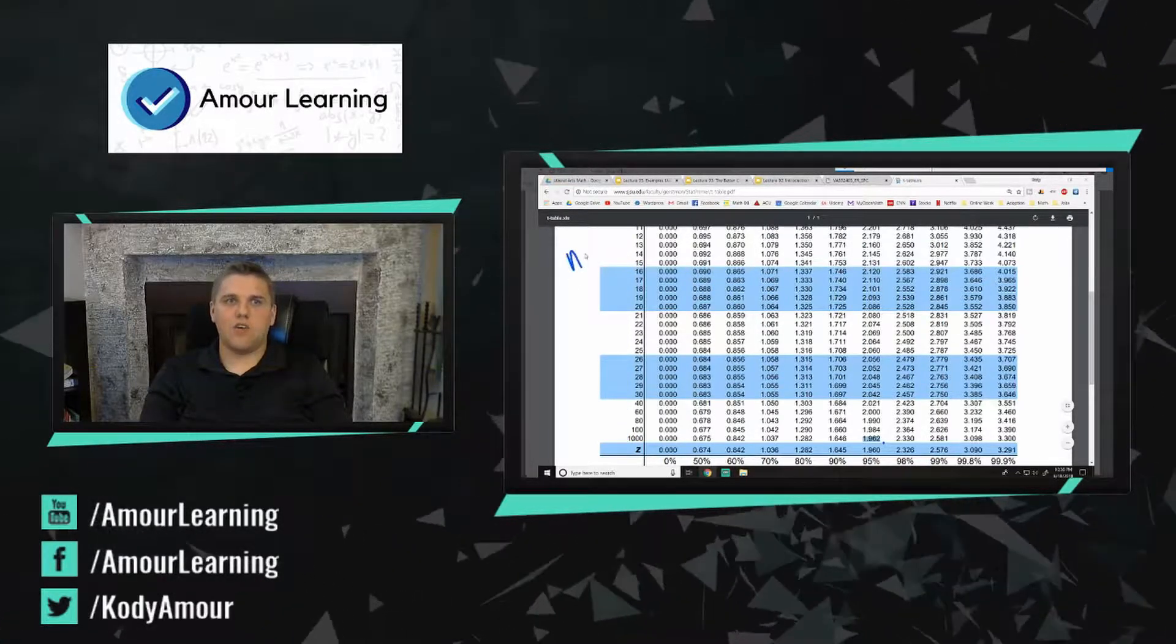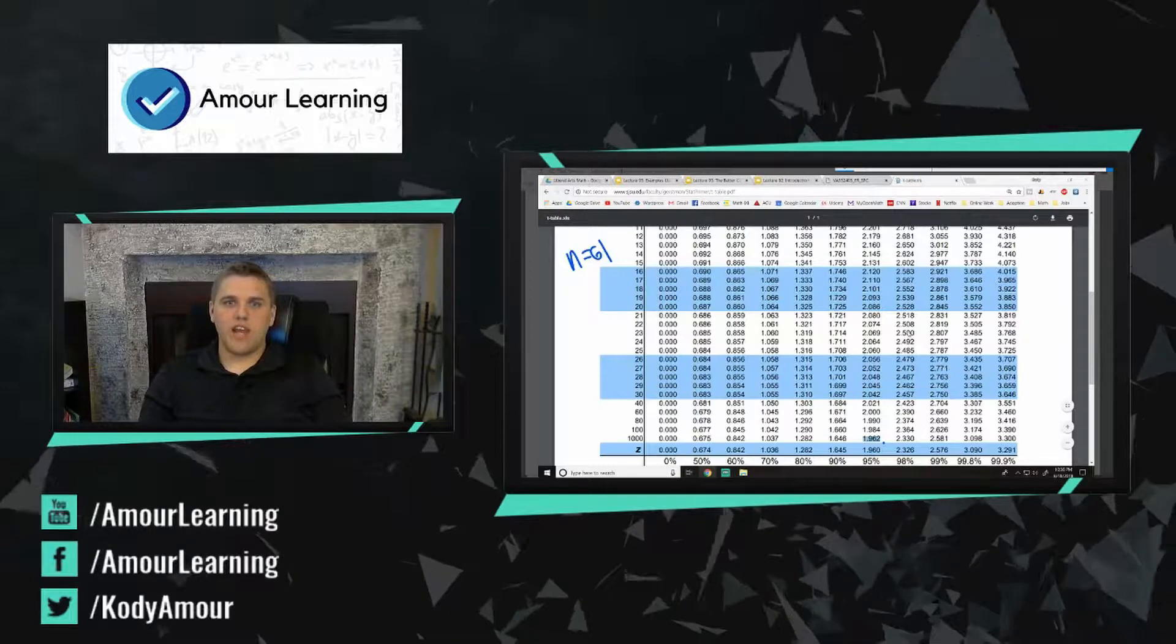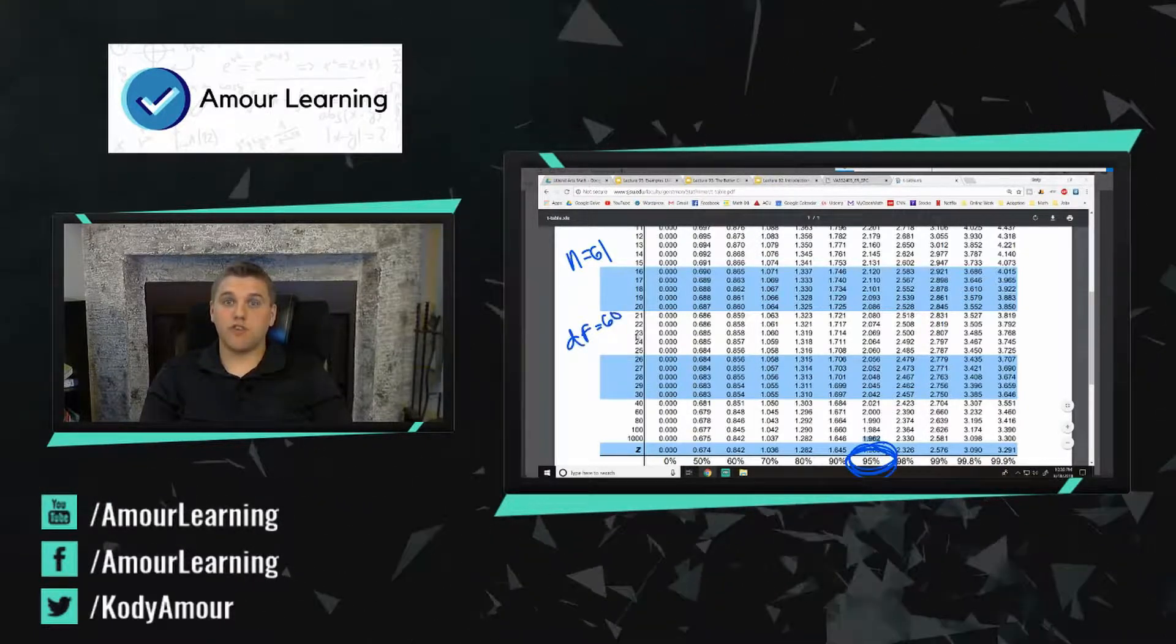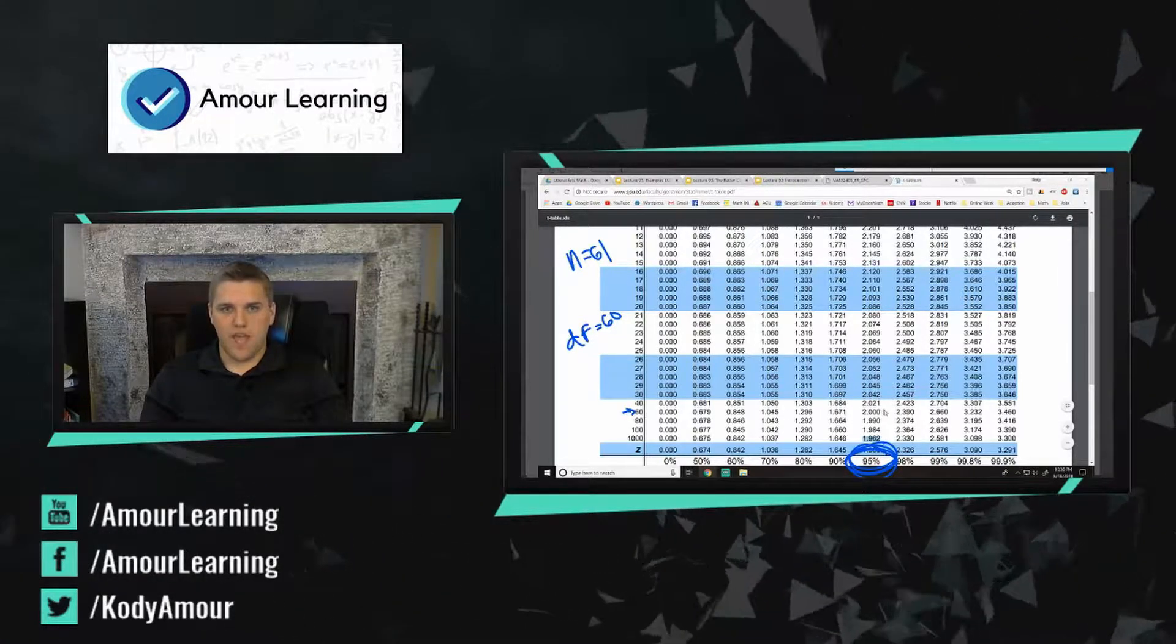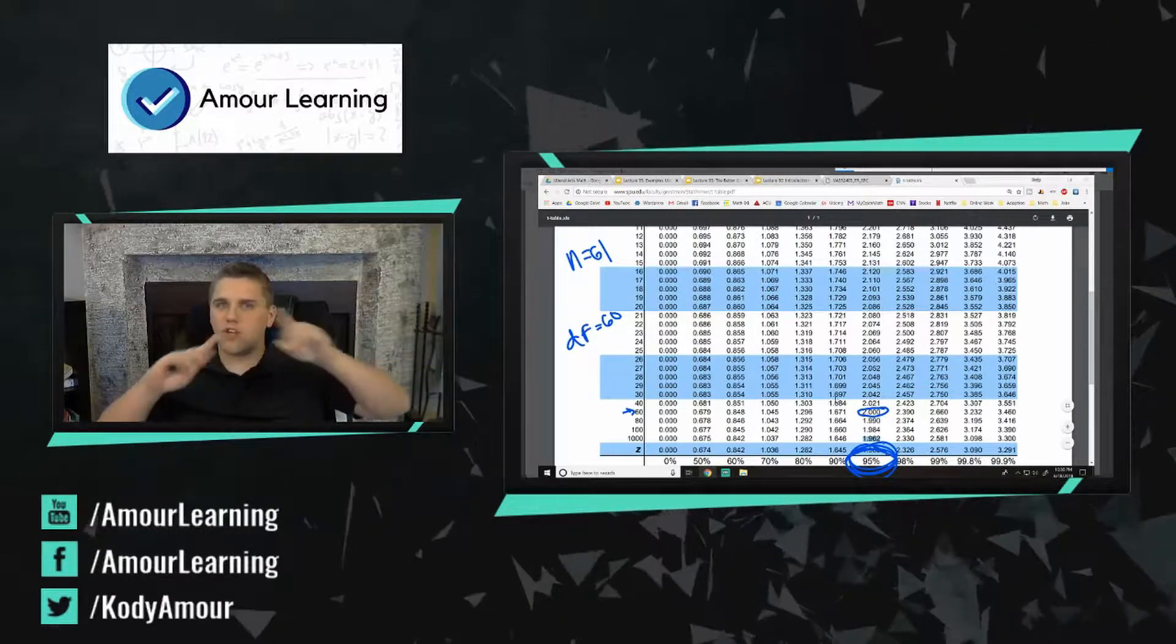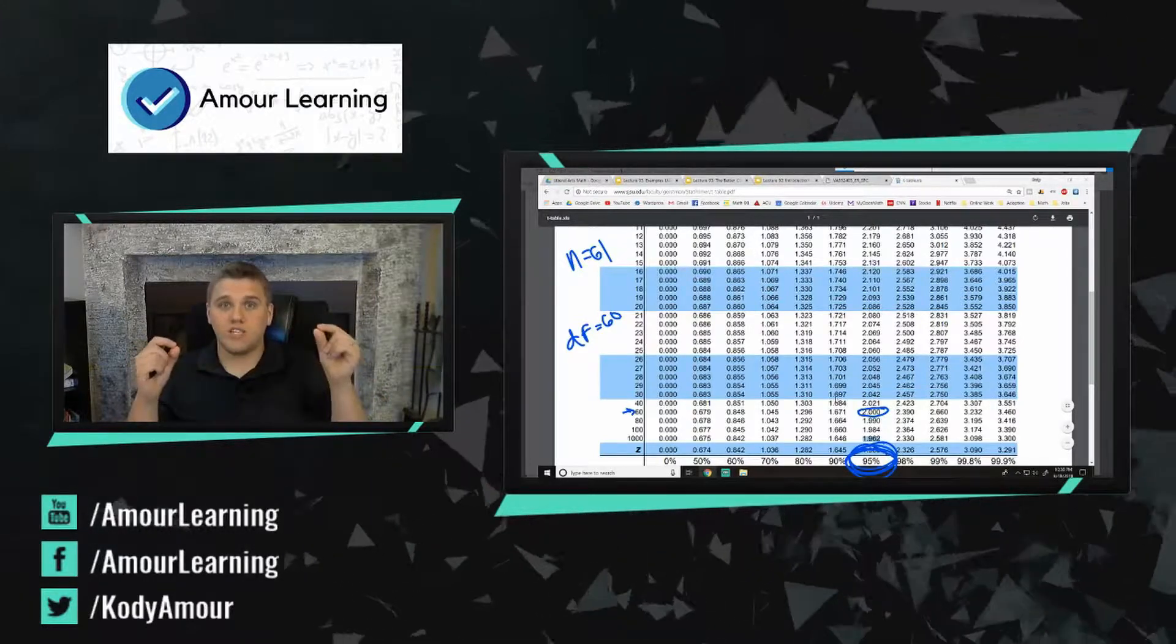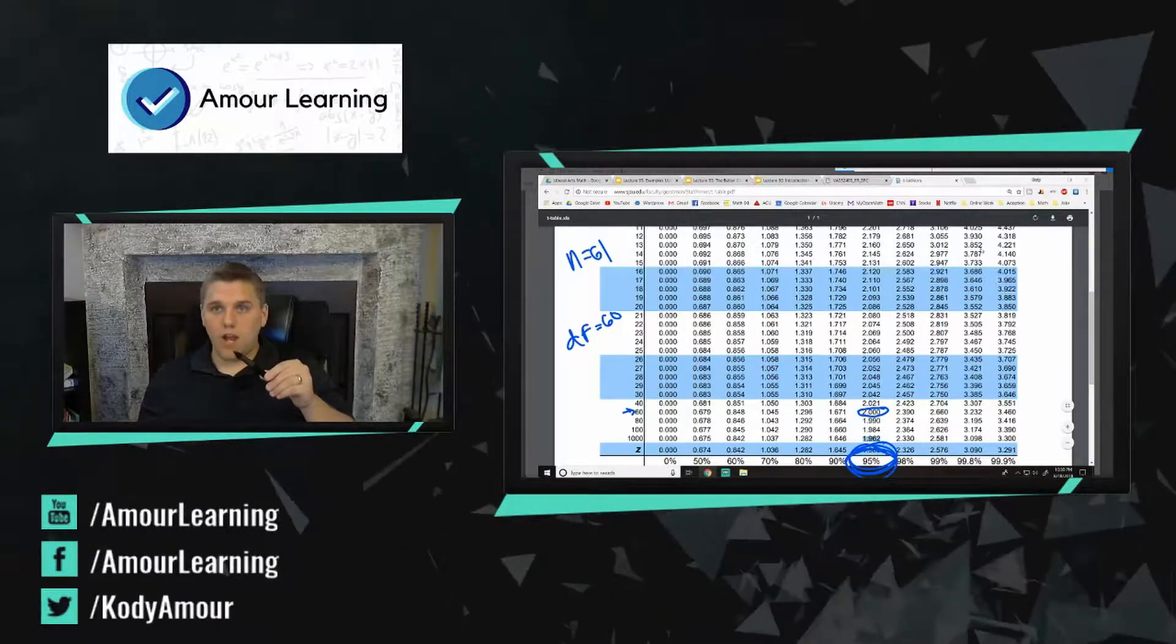So let's go over one example. Let's say we have n equals, let's do 61. Well what T-star would we use if we're doing a 95% confidence interval? Well here's 95% confidence interval and we would use DF equals 60. The degrees of freedom is 60 because 61 minus 1 is 60, which by the way is right here. And that would correspond to a T-star of 2. And so now every single formula that we've ever used, particularly with confidence intervals, Z-star is just going to turn into T-star. So instead of using 1.96 for a 95% confidence interval, in this case we would use a T-star of 2.